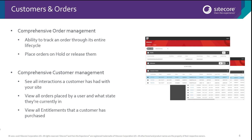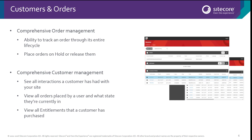With the customer and orders feature, we have a comprehensive order management functionality. You have the ability to track an order through its entire lifecycle. Customer service reps also have the ability to place an order on hold as required and then re-release it afterwards when it's available. We also have comprehensive customer management functionality. You can see all interactions that a customer has had with your site, view all orders placed by a user and what state they're currently in, and view all the entitlements that the customer has purchased. We're going to have another video which deep dives on the customer and order features in much greater detail.